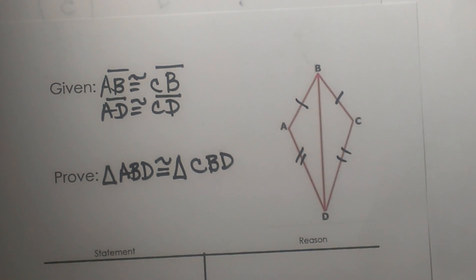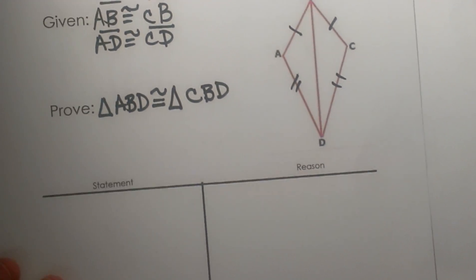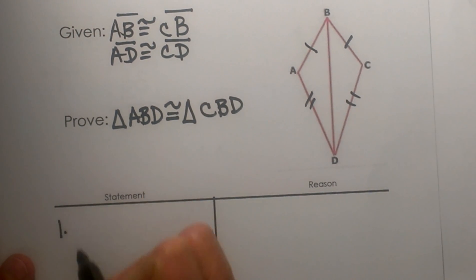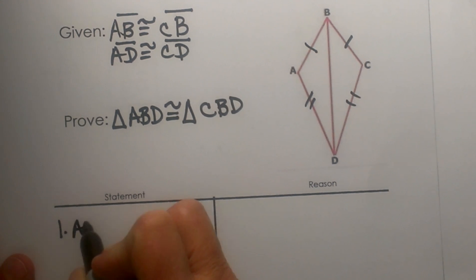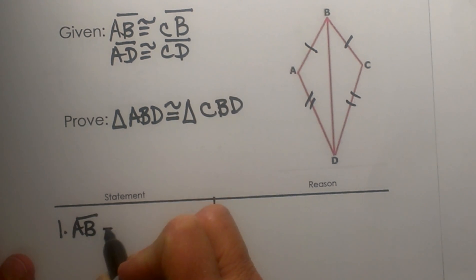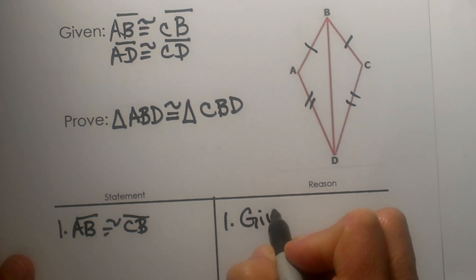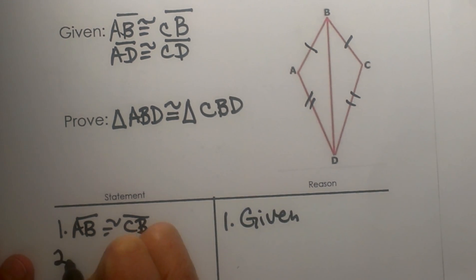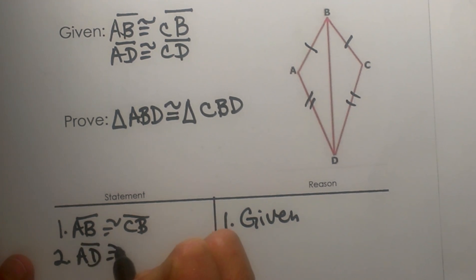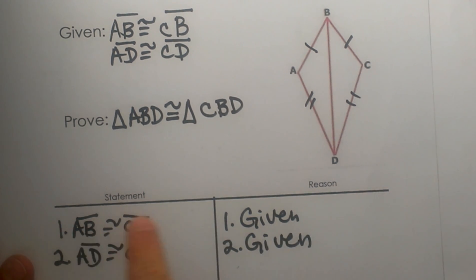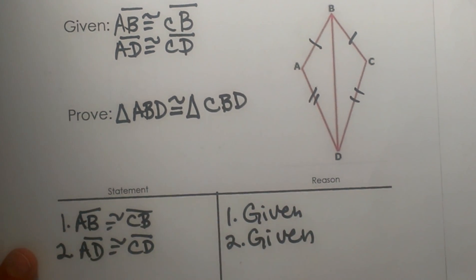And then we have to show that the triangles are congruent. Let's start off by just stating what we have — let's do our givens. Statement 1: AB is congruent to CB, and the reason is given. Statement 2: AD is congruent to CD, and that one is also given. I'm numbering my statements with my matching reasons opposite each other.